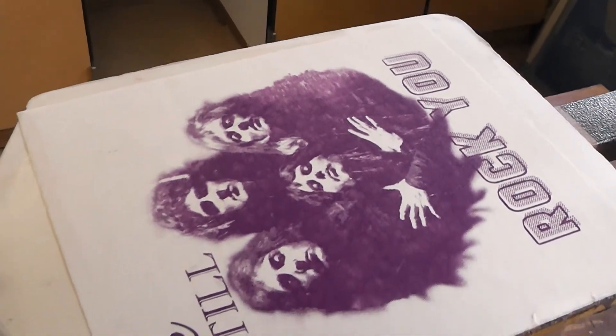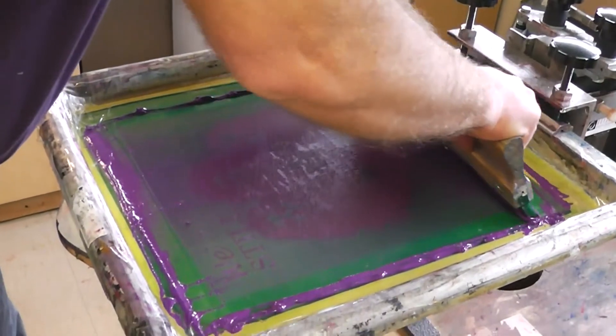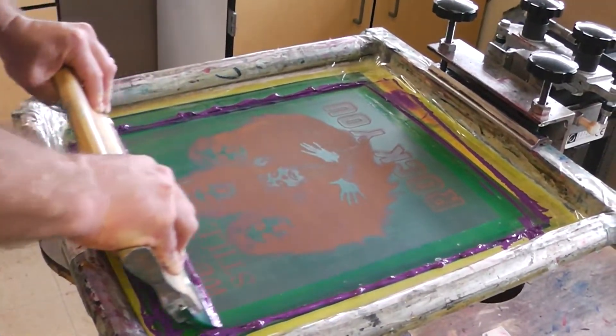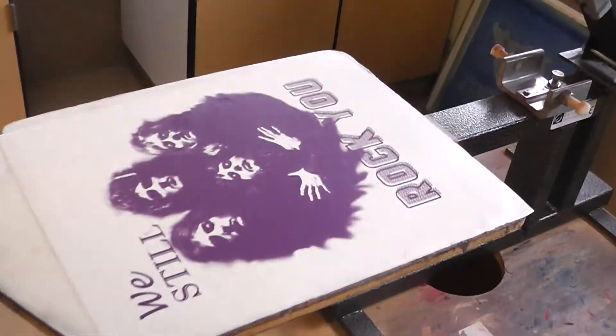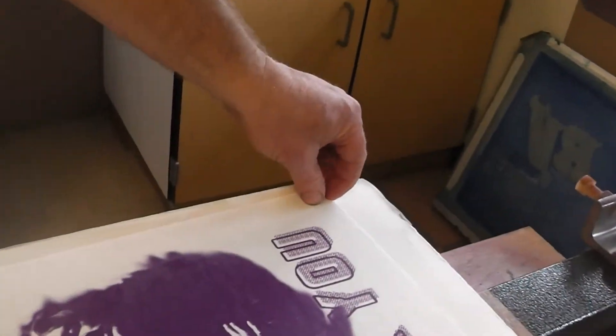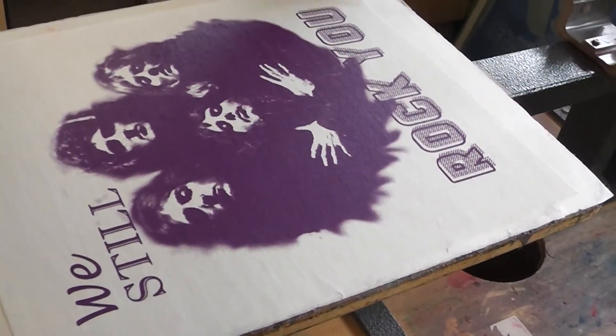I'm just going to bring the screen down again. I have a registration system that allows the screen to come down in the exact same position. So, you don't want to take your shirt off at this point. You want to make sure you have a good print. So, I'm going to bring the screen down and print it a second time. Your goal would be to print a quality print with no more than two passes. Because the more you print, the more chance you're going to have of messing something up.